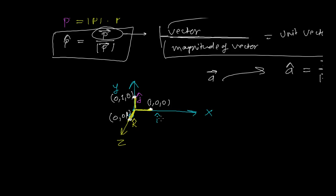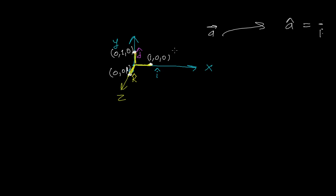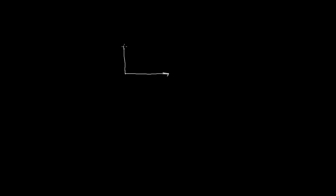Let's first work in a plane — two dimensions — to avoid confusion before moving to 3D. We have the x-axis and y-axis forming a plane, with an origin. Let point p be at coordinate (2, 3), meaning we move 2 units in the x-axis and 3 units in the y-axis.